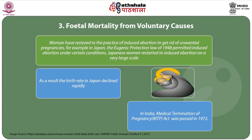Although women have resorted to the practice of induced abortion to get rid of unwanted pregnancies — for example, in Japan the Eugenic Protection Law of 1948 permitted induced abortion under certain conditions, and when Japanese women resorted to induced abortion on a very large scale, the birth rate in Japan declined rapidly. In India, the Medical Termination of Pregnancy Act was passed in 1972.